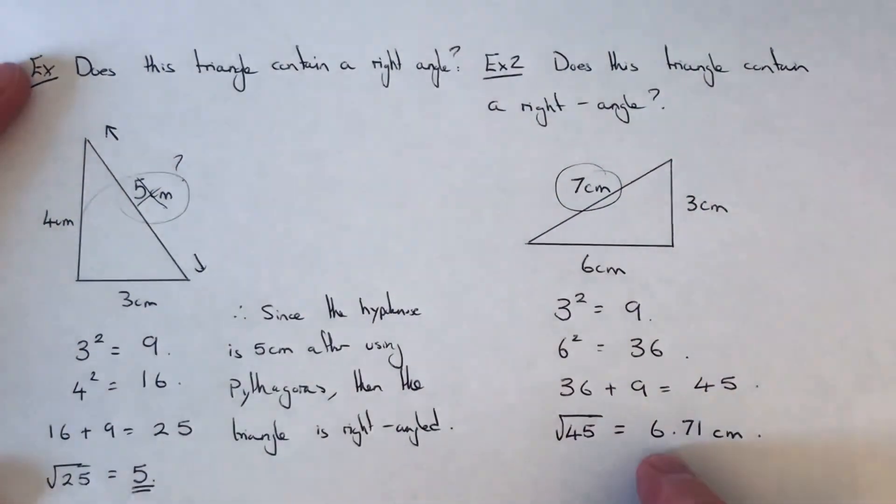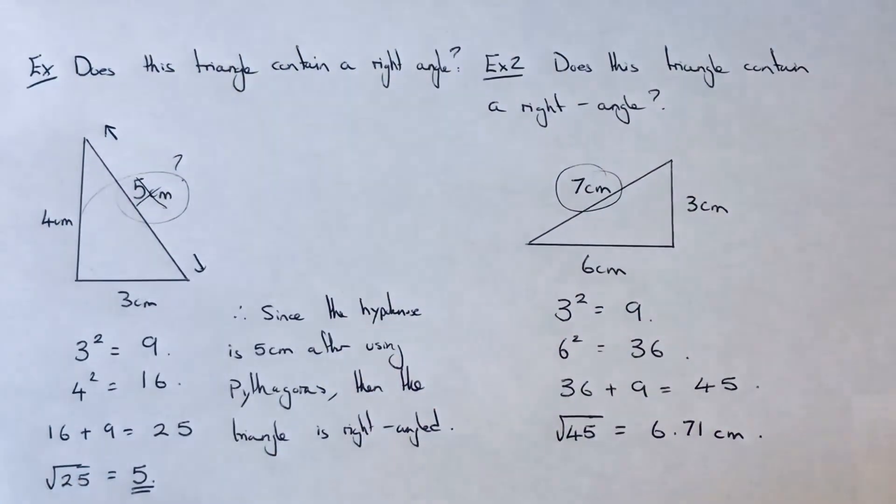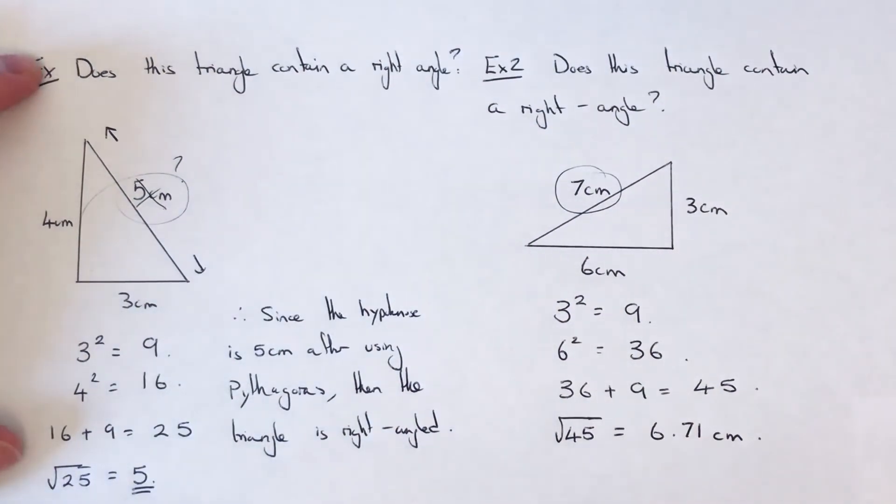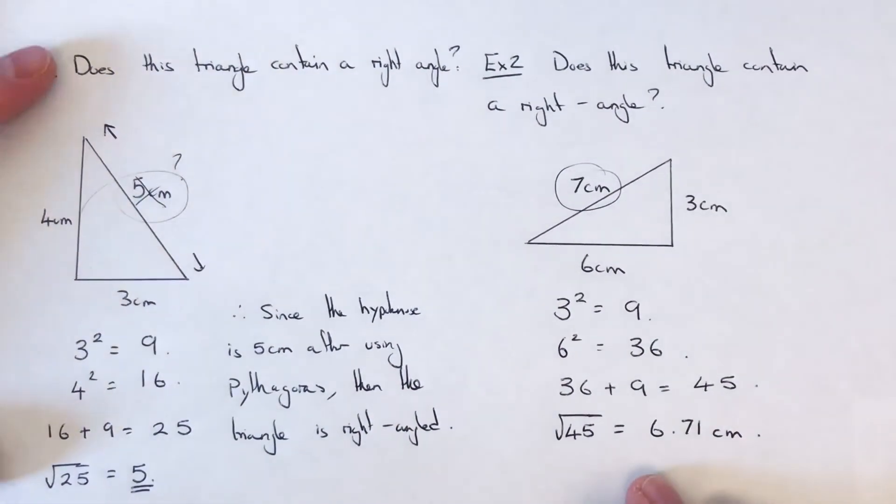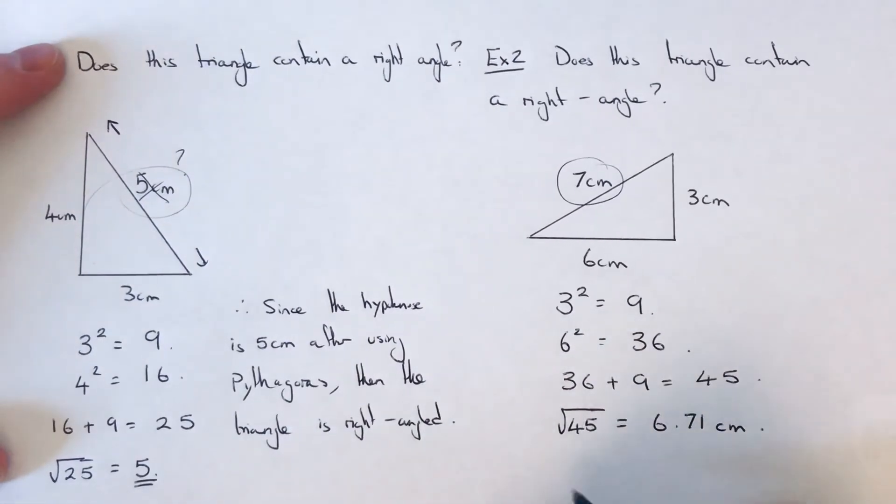So this hasn't come out to the hypotenuse, which was 7. Since this is not the same as 7, this would not be a right angle triangle.